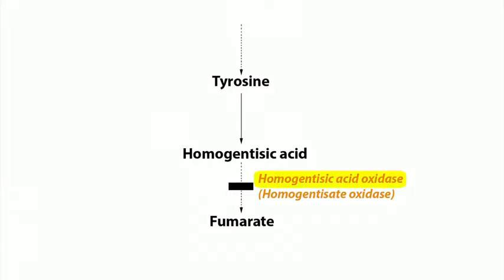Moving on to alkaptonuria — this causes something called ochronosis. It's an enzyme deficiency of homogentisate oxidase, so these patients can't degrade tyrosine well. It's an autosomal recessive disorder but not as severe as PKU. Homogentisic acid gets into the urine and connective tissue, causing a dark brown pigment — connective tissues darken, the sclera can develop dark brown pigment, and the urine turns black especially when exposed to air. Patients can also have arthralgias because homogentisic acid deposits are toxic to cartilage.